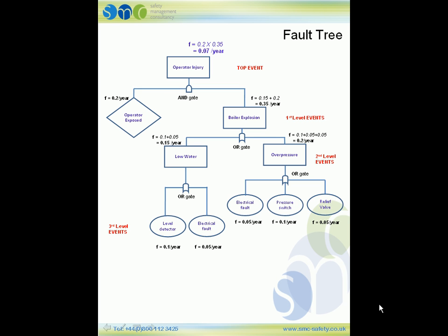To get your marks for this question, you need to draw a fault tree that looks something like that, calculate all the frequencies at each of the level events, and calculate the frequency of the operator injury at 0.07 per year. However, if you made a slight error in your fault tree or calculated one of the frequencies slightly incorrectly, but the majority of the fault tree and frequencies were mostly correct, NEBOS would give you a good lot of the marks — you wouldn't lose all the marks.